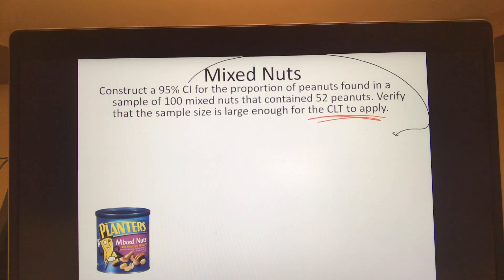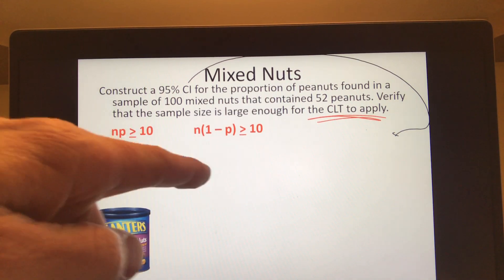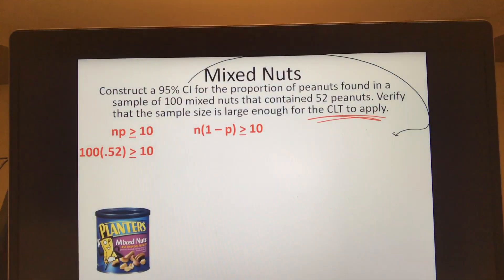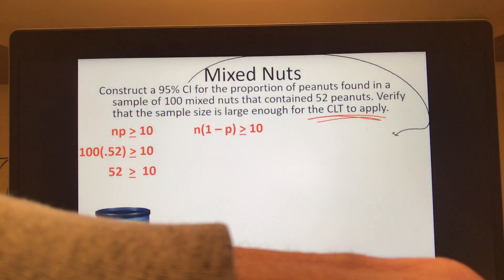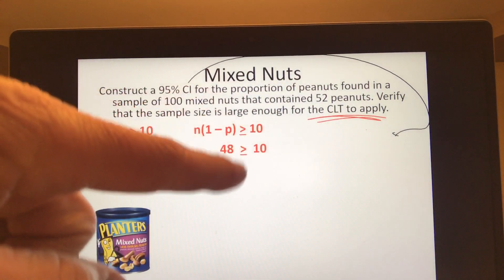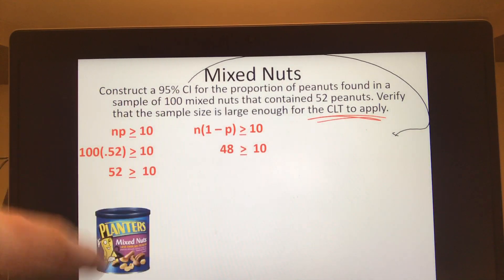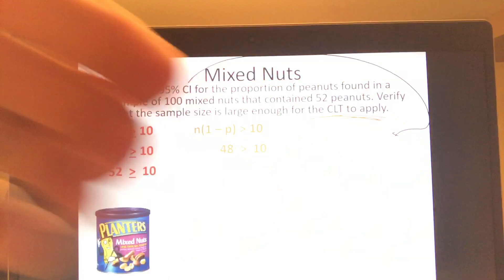So this is one where you've got to actually calculate the sample proportion - it's 52 out of 100, of course you know that's 0.52. Here's that verification of the sample size being large enough. I've got to check both of these: make sure np is greater than or equal to 10, of course it is, 52 certainly is. Do the other one - 48 certainly is. So that makes sense. Basically you're checking if both groups, your peanuts and your non-peanuts, are greater than 10. Central limit theorem applies.